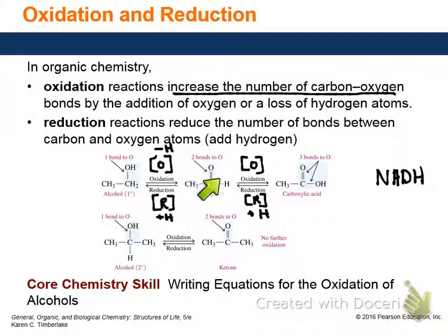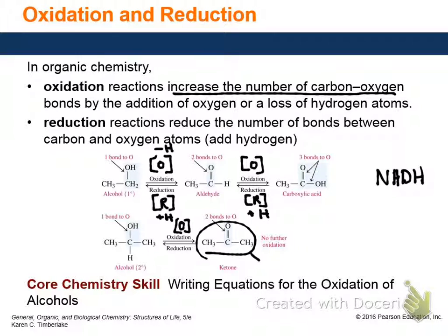For a secondary alcohol, you lose a pair of hydrogens — that's the oxidation process. But notice: after forming the ketone, it can't be further oxidized. That's the point — no further oxidation. Why? Because it doesn't have a hydrogen on it anymore. So primary alcohols go to aldehydes and then carboxylic acids; secondary alcohols just go to ketones and then stop.